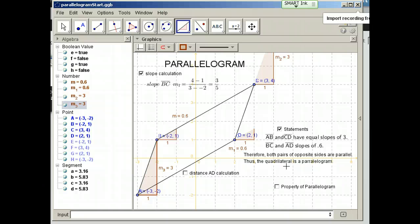So a parallelogram is two pairs of opposite sides that are parallel. This is parallel to this. This side is parallel to this side.